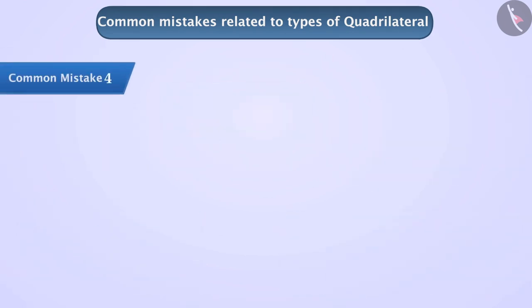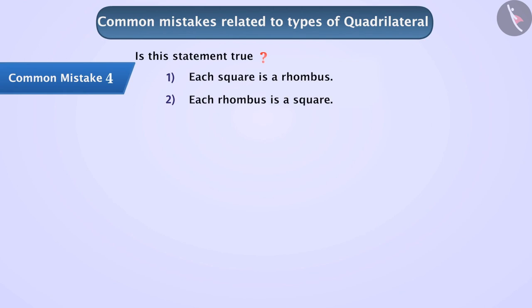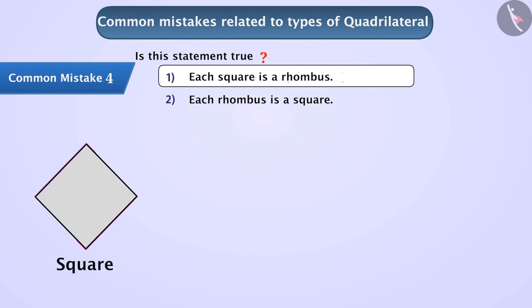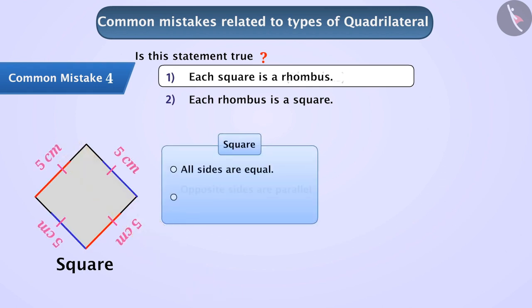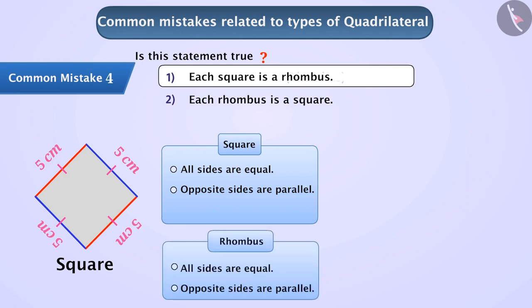Common Mistake 4: is the given statement correct — each square is a rhombus and each rhombus is a square? We will make a square to understand this. If we measure the sides of the given figure with a ruler, all its sides are equal and its opposite sides are parallel. These are the properties of a rhombus, so we can say that every square is a rhombus.